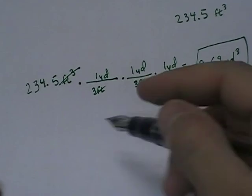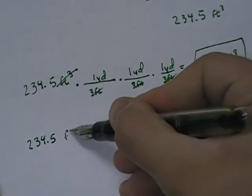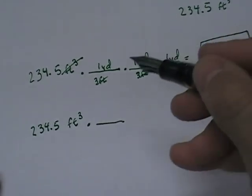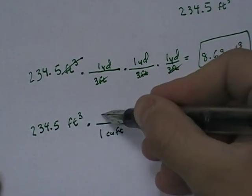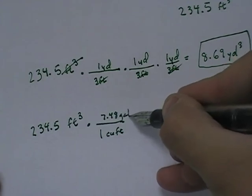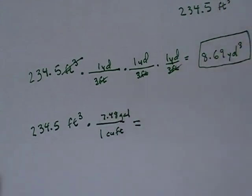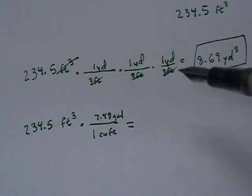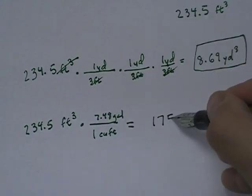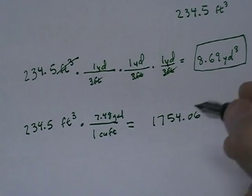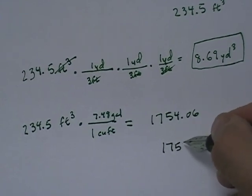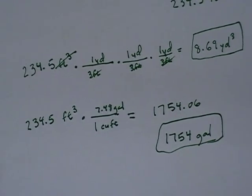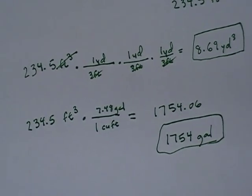Now for gallons, the same conversion, 234.5 feet cubed. And we're going to multiply this. Now this is an easy one. One cubic foot is 7.48 gallons. And a lot of times in industry, we just cheat and we use the 7.5. But the actual conversion is 7.48. And so if I take this number here times 7.48, I end up with 1754.06. And we're going to round that. We're going to call that like 1,750 or 1,754 gallons. We don't need any decimal places or anything like that. This would be a 1,754 gallon tank.